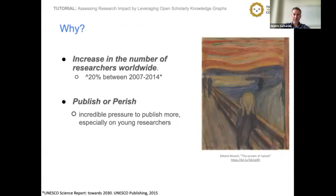Why do we experience such growth? Simply, the number of researchers is growing, competition is increasing, and there is immense pressure for researchers, particularly young ones, to publish more in order to distinguish themselves. This phenomenon is known as publish or perish.